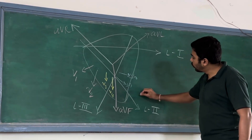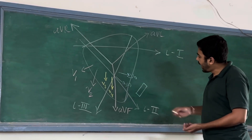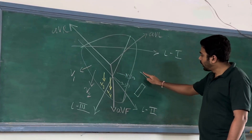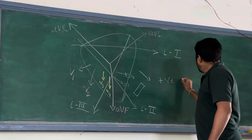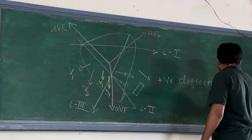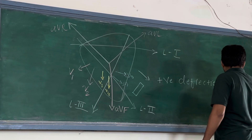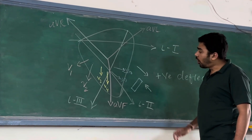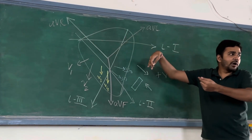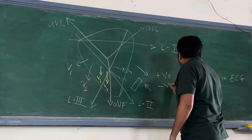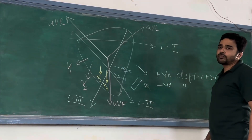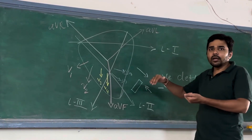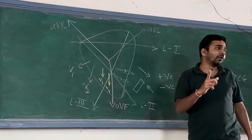So if it is Lead 2, this is Lead 2, and the direction of current is like this — so in any tissue of the heart, if the direction of current is toward the lead it will be positive deflection in ECG. And if the direction of current is in the opposite direction, away from the lead, there will be negative deflection in ECG. So current in the direction of lead is positive deflection, and opposite direction is negative deflection.